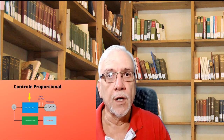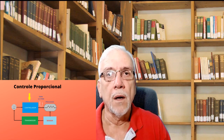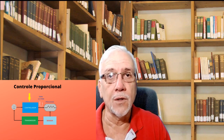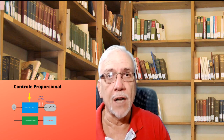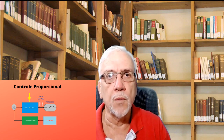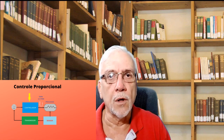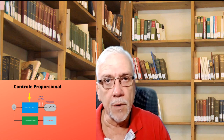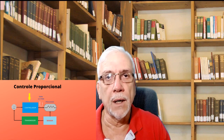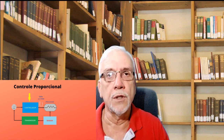No nosso diagrama de blocos, o cérebro do sistema de controle é o controlador. O controlador tem a missão de receber a informação do elemento sensor, comparar com o valor desejado — que é o setpoint. Você define qual o valor que quer controlar; ele compara com o setpoint e extrai um erro, porque a variável de processo é comparada ao valor desejado. Esse erro vai ser amplificado pelo ganho, que é um parâmetro que você também coloca no controlador para fazer a sua estratégia de controle.